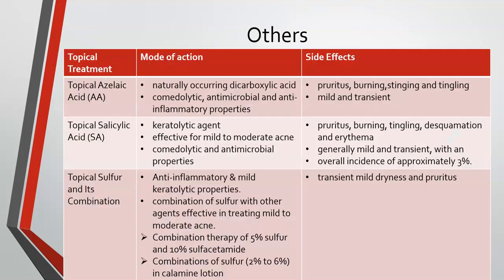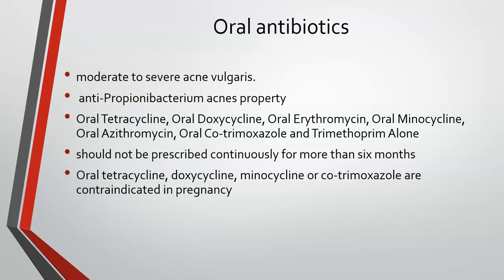Other treatments include topical azelaic acid, salicylic acid and sulfur, but these combinations are usually prescribed by dermatologists or general practitioners who have undergone training in using these drugs. Oral antibiotics are an effective treatment usually used for moderate grade acne and can also be used for severe grade, which should be managed by a qualified dermatologist. They have strong anti-P. acnes properties. Many drugs are available, especially from the tetracycline group and also the Bactrim group. Even though they need to be prescribed for at least a few months, they should not be prescribed continuously for more than six months. Some antibiotics are contraindicated in pregnancy, such as tetracycline, doxycycline, minocycline and Bactrim.